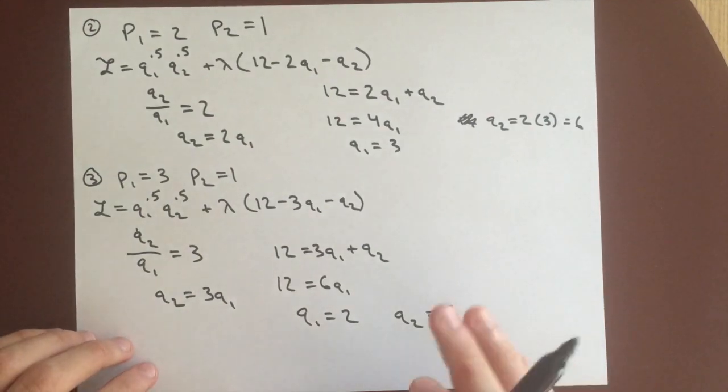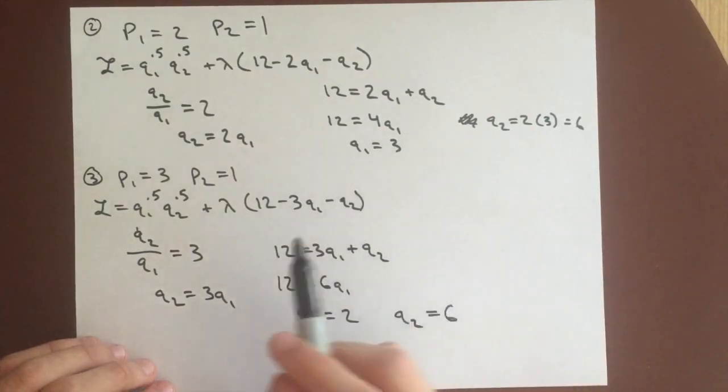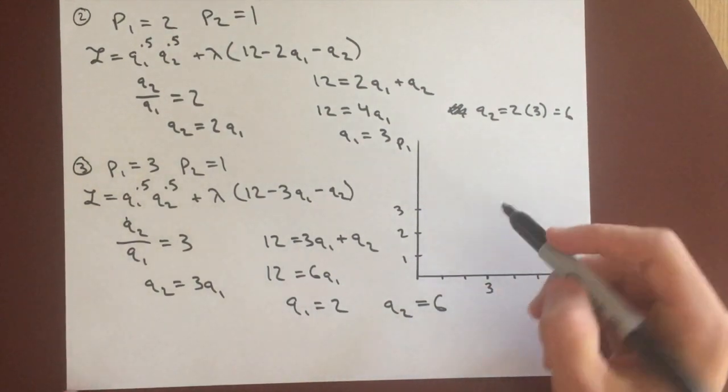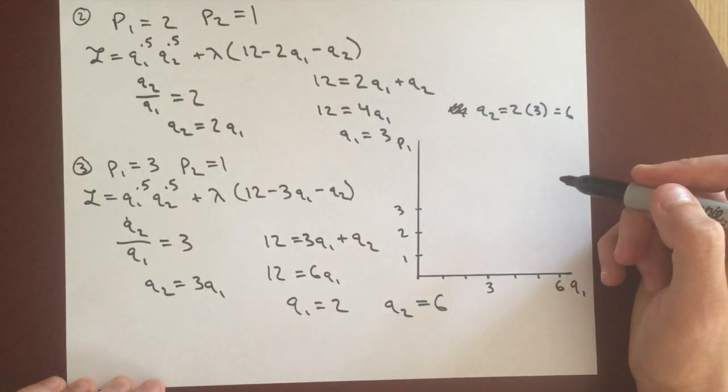Now we have three separate points with different prices and different quantities for good 1. Okay, so I've added this little graph here, just so we can finish up by graphing our points.